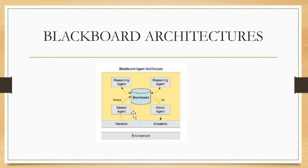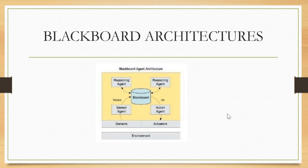In blackboard architecture there are multiple agents: a reasoning agent, a sensor agent, and an action agent. Two separate agents sample the environment through available sensors and actuators. The blackboard contains the common state of the environment, which is constantly updated, and the action agent translates actions into control signals for the actuators.